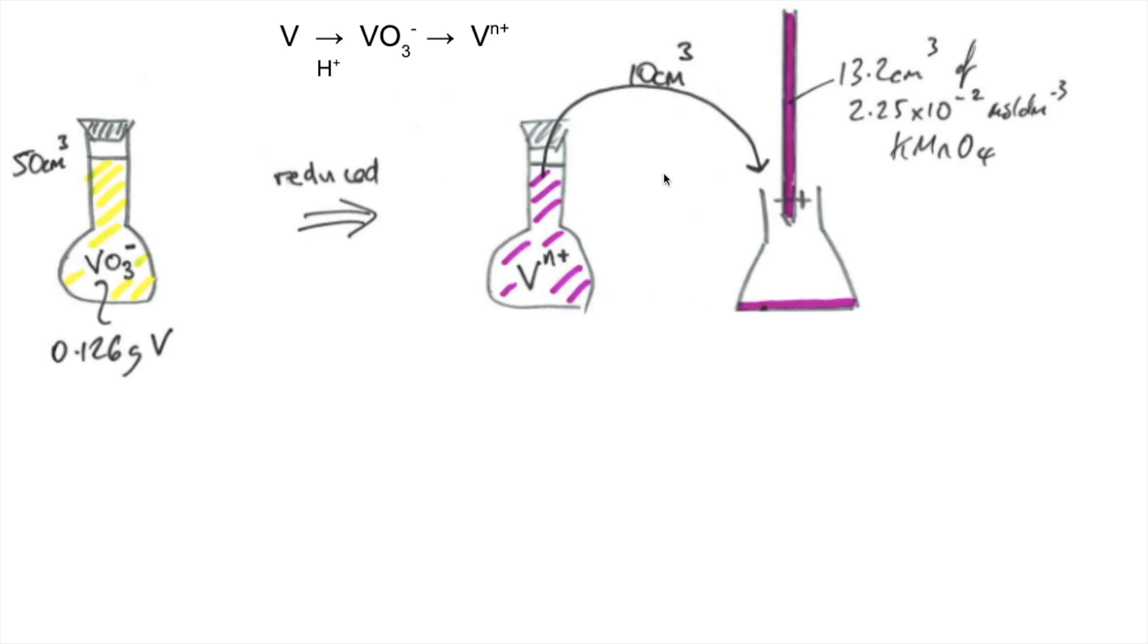Obviously, when they take the 10 cm cubed out of there, you've only got a fifth of the Vn plus going into the titration flask. And then obviously we've got the titration taking place.